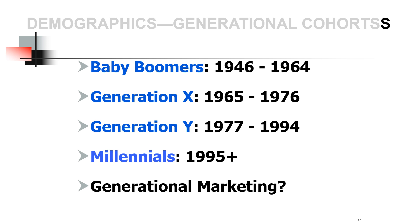There's Generation X, those born between 1965 and 1976. There's Generation Y, those born between 1977 and 1994. We might also refer to those as older millennials — the people who came of age at the turn of the century. And then we have the millennials, or younger millennials, who are typically the 18 to 24-year-olds, but they might in fact be a little bit younger than that.